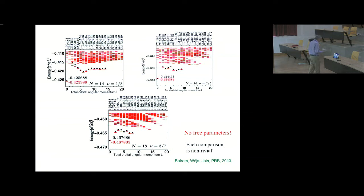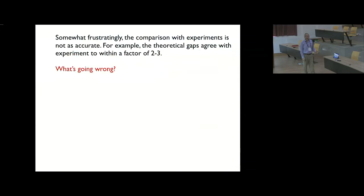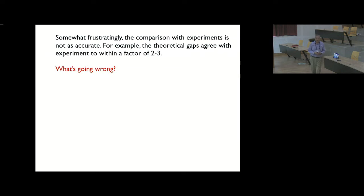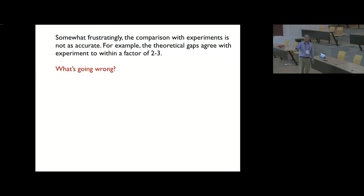Based on this, you might think we can also compare with experiments. But it turns out — and it's been somewhat of a frustrating feature of fractional hall effect — that the comparison with experiments is not as accurate. For example, if we take this theory and calculate the energy required to produce a far-separated particle-hole pair, you get a number which is off by a factor of 2 to 3 compared to the experimental number measured from the activation behavior of the longitudinal resistance.